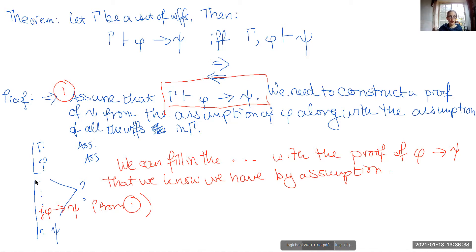And then we have what we need here at line n because we can get it through conditional elimination. This needs a line number, call that line i. Conditional elimination of lines i and j. So we know that from gamma we can already prove the conditional. If we add to our set of assumptions the antecedent, then we can derive the consequent through conditional elimination. So that's one direction.